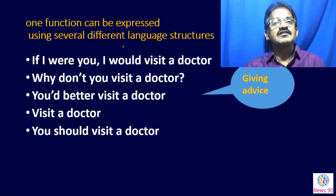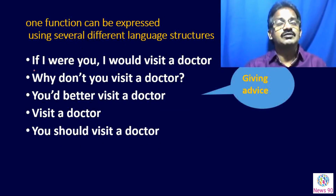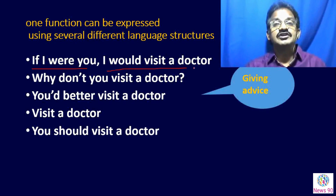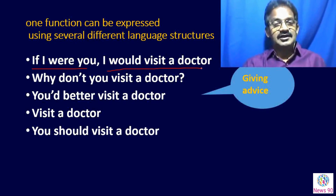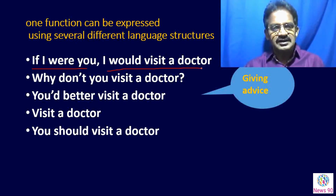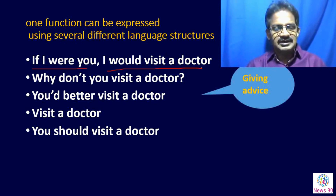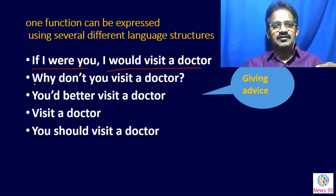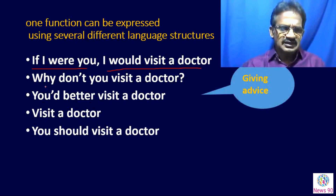One function can be expressed using several different language structures. For example: 'If I were you, I would visit a doctor.' How is this sentence? You are suggesting — you are giving advice that the person should visit a doctor because their condition is becoming worse day by day. So, 'I advise you that you should visit the doctor.' The same function can also be expressed differently depending upon formal and informal situations.